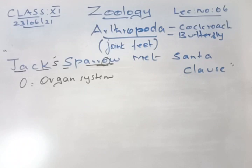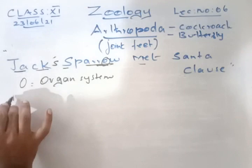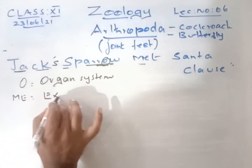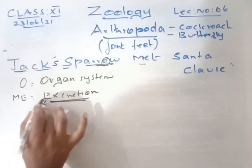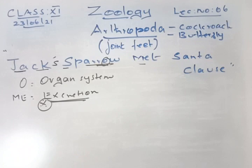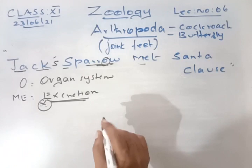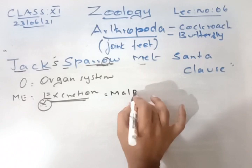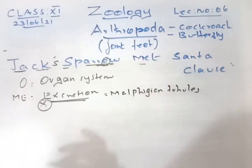M and E stand for the excretory organ. In Platyhelminthes it is the flame cell; in Annelida it is the nephridial gland; in Arthropoda, the excretory organ is the Malpighian tubules.